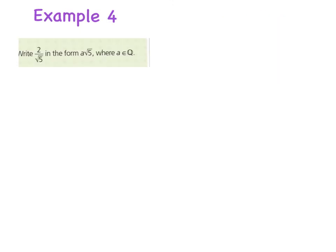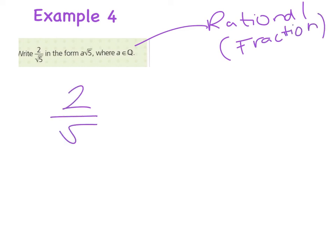So example number 4 says, write 2 over √5 in the form of a√5, where a is an element of the rational numbers. And a rational number is any number that can be written as a fraction. So positive or negative. Okay, so we have 2/√5.